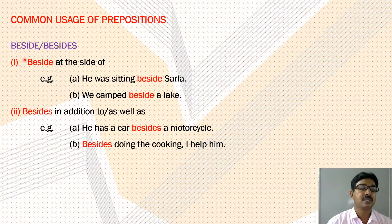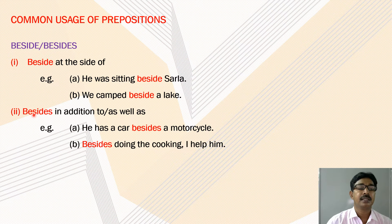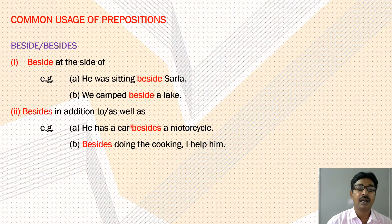The prepositions 'beside' and 'besides': 'beside' means by the side of. For example: he was sitting beside Sarla; we camped beside a lake. 'Besides' means in addition to, or as well as. For example: he has a car besides a motorcycle. Another example: besides doing the cooking, I helped him.